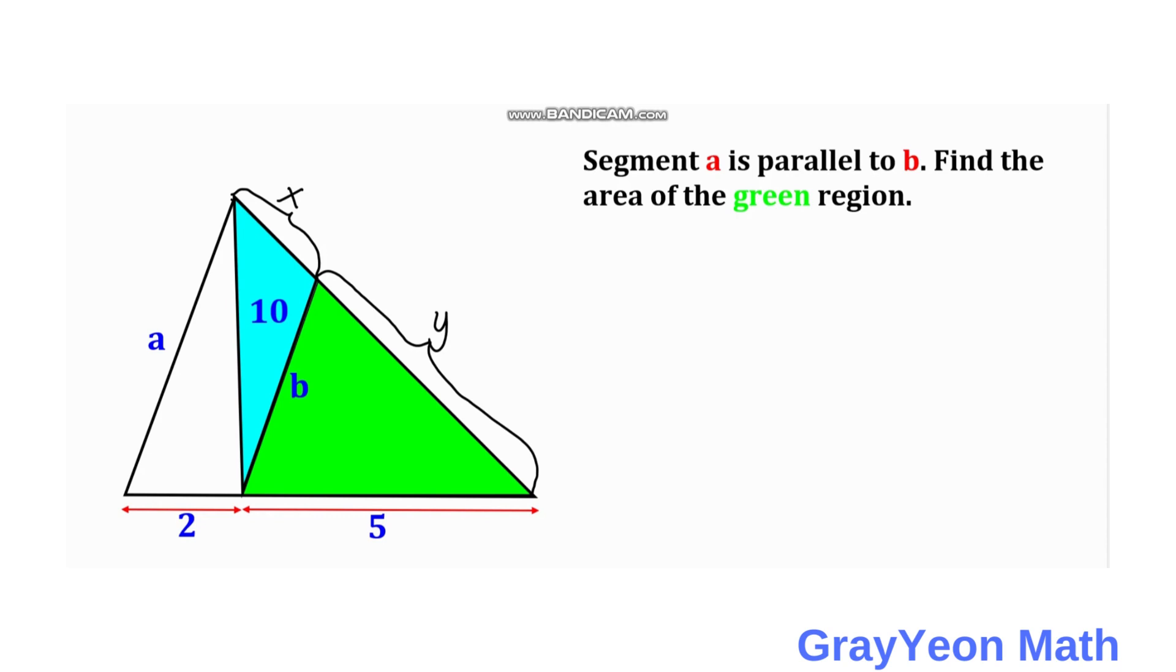Next, we make an equation about their proportionality. Focusing on the green triangle, we have y over 5 equals, focusing on the largest triangle, x plus y over 2 plus 5, or y over 5 equals x plus y over 7.